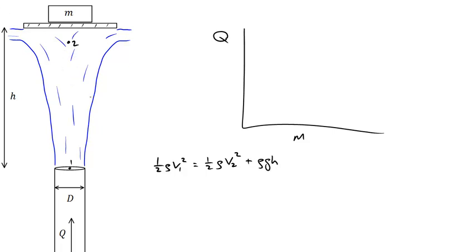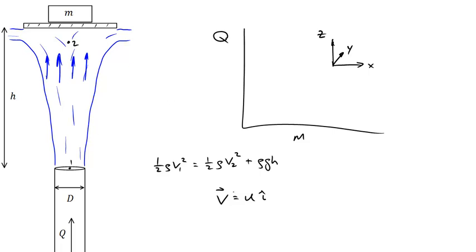Note that I've exaggerated the width of this jet as it moves out, so it looks like the fluid is moving up and to the right, but in reality it's basically straight up. If we were to write a velocity vector, we'd have U in the i-hat direction (x-axis), V in the j-hat direction (y-axis, into the screen), and W in the k-hat direction (vertical z-axis). Because the water is only moving basically straight up, there's no component in the U or V directions. So the average velocity at points 1 and 2 can be replaced with W1 and W2.